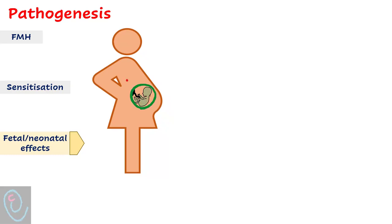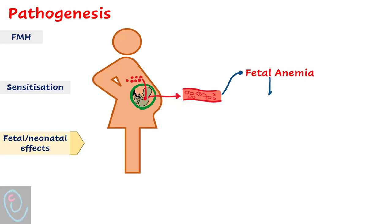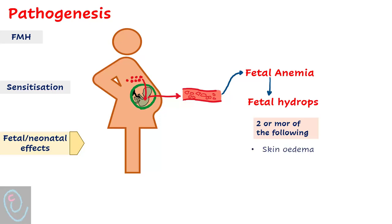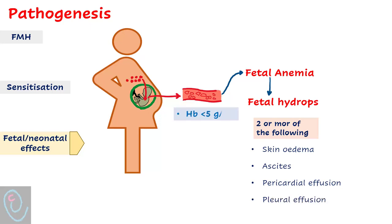Transplacental transfer of maternal antibodies leads to hemolysis of fetal red blood cells, and consequently fetal anemia develops. Severe anemia leads to hydrops fetalis. Hydrops fetalis is diagnosed by the presence of two or more of the following: skin edema, ascites, pericardial effusion, or pleural effusion. Hydrops occurs when hemoglobin is less than 5 g/dL or hematocrit is less than 15%.